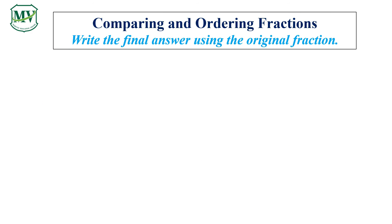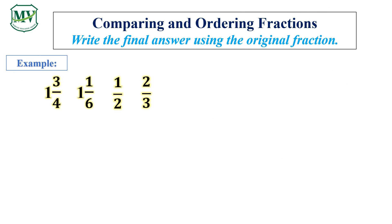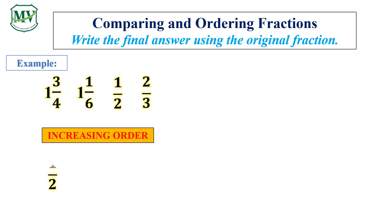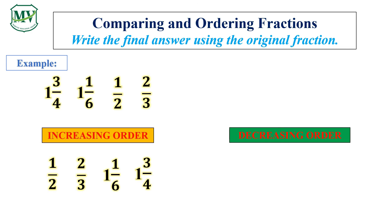Writing the original fractions in increasing order, we will have: 1 half, 2 thirds, 1 and 1 sixth, and 1 and 3 quarters. Writing the original fractions in decreasing order, we will have: 1 and 3 quarters, 1 and 1 sixth, 2 thirds, and 1 half.